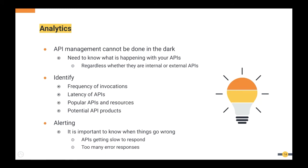API analytics and business analytics from an API management vendor help you identify the frequency of invocations and the latency of APIs. Another interesting capability is identifying popular APIs and resources. If you're exposing to external parties, after identifying popular APIs you can create API products — combining multiple API resources into one package that application developers can subscribe to instead of subscribing to multiple APIs one by one.